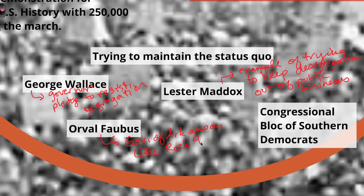There was also resistance in Congress. Southern congressmen banded together to block any civil rights legislation. Some held positions as committee leaders and kept civil rights bills from even exiting committee to be voted on — preventing these laws from passing and maintaining the status quo against desegregation and equal rights.